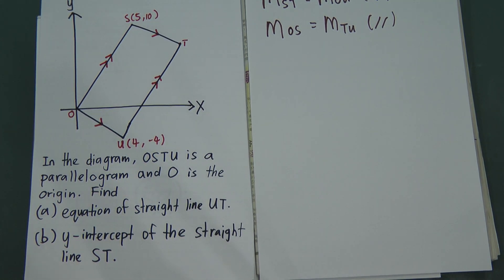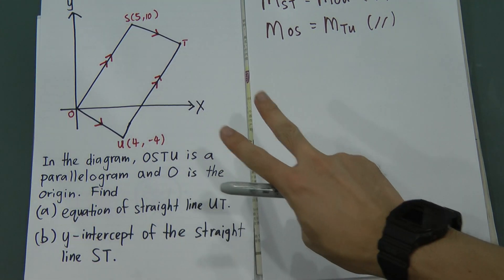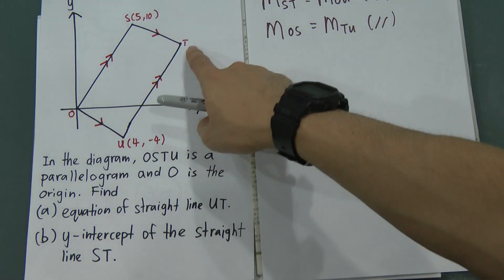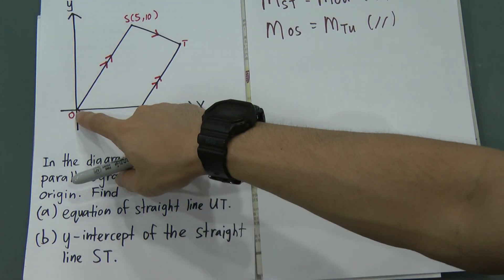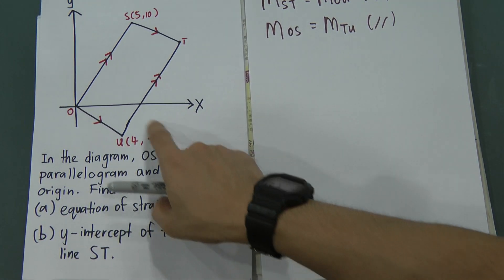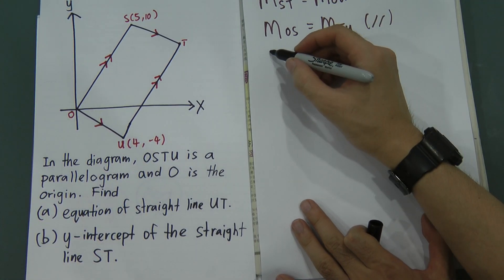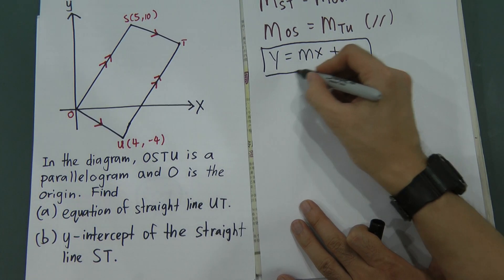The first question asks for the equation of the straight line U-T. In order to find the equation, we need two things: first, we need to know the gradient; second, we need to have one coordinate on the straight line. We only have one coordinate, so we cannot get the gradient directly. Since they are parallel, we can find the gradient for O-S, and then use that with a coordinate to get C using the straight line formula Y equals MX plus C.